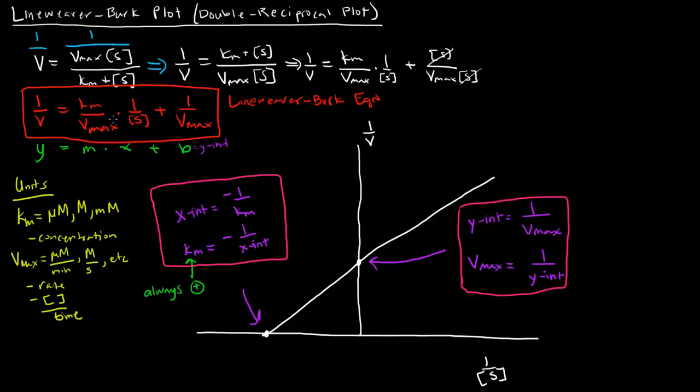So if you know these intercepts, you can also find that. All you have to do is find the Km, find the Vmax, and then just divide them and get the slope. I hope that was helpful. In the next video, I'll talk about a few more things about the Lineweaver-Burk plot, and then I'll provide you with an example. See you in the next video.